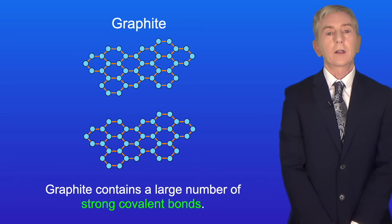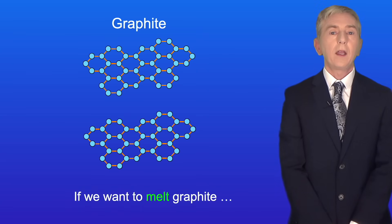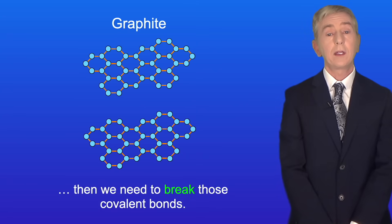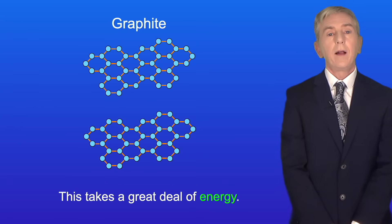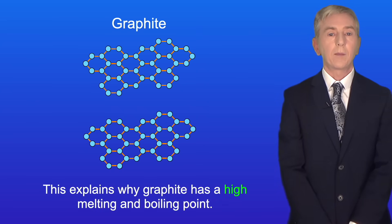Now graphite contains a large number of strong covalent bonds. If we want to melt graphite then we need to break those covalent bonds and this takes a great deal of energy. This explains why graphite has a high melting and boiling point.